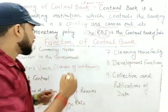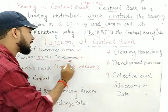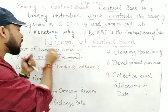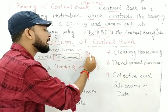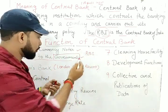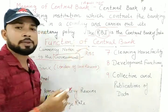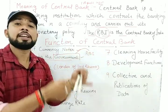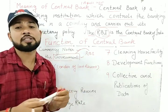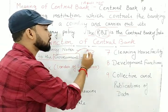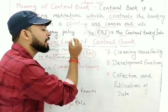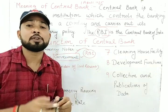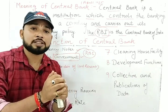The second function is banker to the government. RBI is known as the banker to the government. When the government needs funds, RBI provides the money. When the government has surplus money, they can deposit it with RBI. RBI also acts as an advisor and supervisor regarding monetary policy to the government.